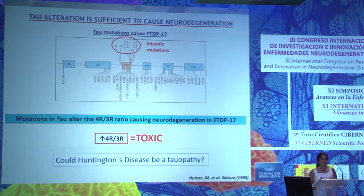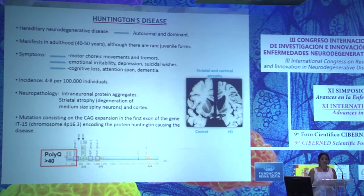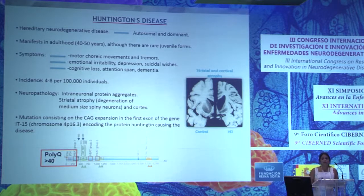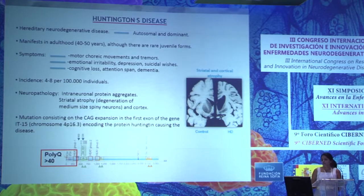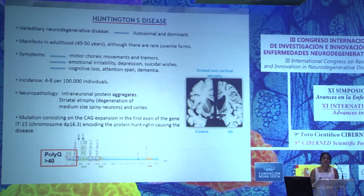Is this happening in Huntington's disease? Huntington's disease is a fatal neurodegenerative disorder with age of onset in midlife. The most characteristic symptoms are motor — chorea and tremors — but patients also have psychiatric symptoms, cognitive loss, memory loss, and dementia. The most affected brain region is the striatum, where medium-sized spiny neurons die, but there is also cortical atrophy. The mutation consists of an expansion of the trinucleotide CAG in the coding region of the huntingtin gene, producing an expanded polyglutamine tract in the protein.